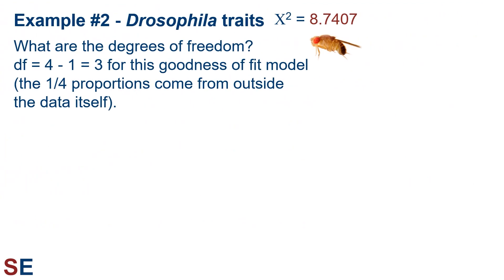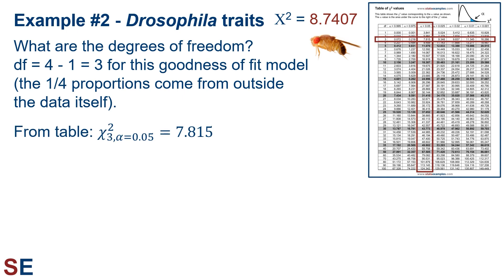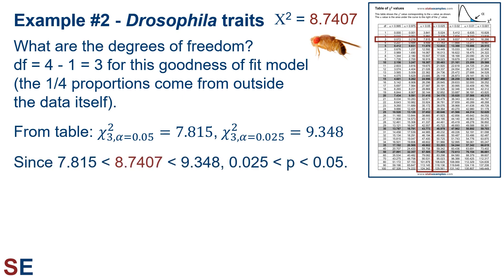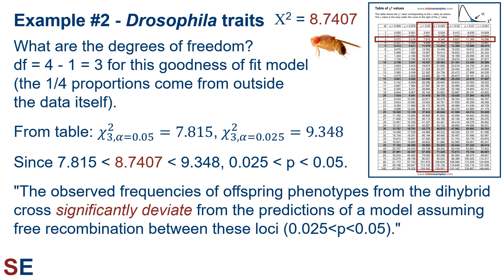We have our chi-squared value and want to know if it's significant. Just like before, degrees of freedom = 4 − 1 = 3. The critical value at alpha = 0.05 with 3 degrees of freedom is 7.815. Our calculated value of 8.7407 is larger than this, so we also check the next column: the critical value for alpha = 0.025 is 9.348. Since 7.815 < 8.7407 < 9.348, we get 0.025 < p < 0.05. Because p < 0.05, we conclude: the observed frequencies significantly deviate from the predictions of a model assuming free recombination between these loci (0.025 < p < 0.05). This indicates that the loci for eye color and wing morphology are linked — they seem to be fairly close to each other on the same chromosome.